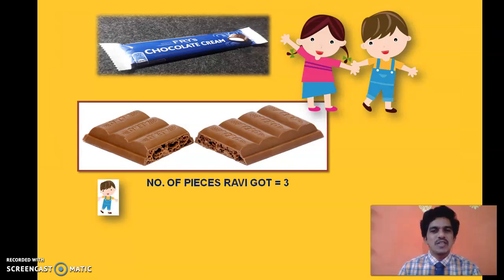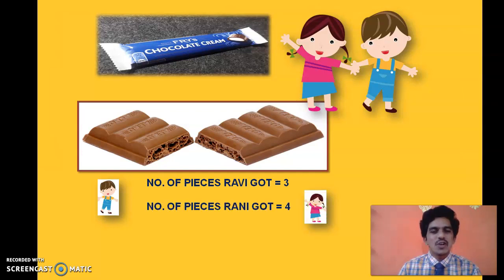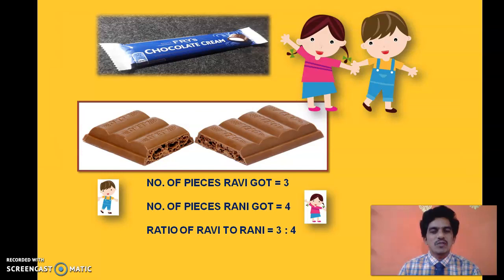She gave three pieces to Ravi and she herself took four pieces. So Ravi got three pieces and Rani got four pieces. The ratio of Ravi to Rani is 3 is to 4. When you have an object and divide it into parts, you can express them as a fraction or a ratio. This ratio concept is very important — that's why I am revising it here.